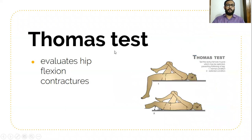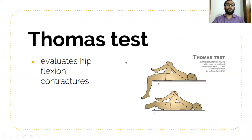Coming to the Thomas test, which is positive in fixed flexion deformity of the hip. Here you can see the right hip is flexed. Whenever there is a rise of the left lower limb from the couch, that means there is a fixed flexion deformity of the left hip. This is the Thomas test.